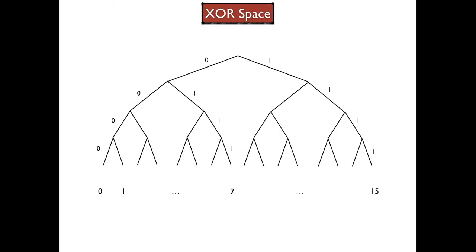Previously, we saw the tree structure like this with the nodes ranging from 0 to 15 on the leaf layer.